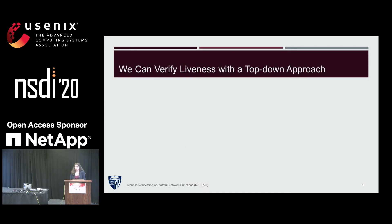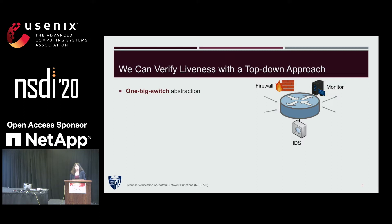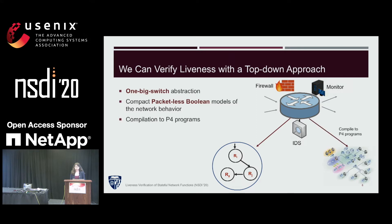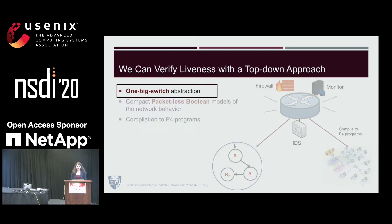In this work, we show that liveness verification is possible using a top-down approach. To this end, we provide a simple, familiar abstraction — one big switch — for users to write their desired functions such as firewall and intrusion detection system. We then model the behavior of these functions as compact Boolean and packetless formulas that can be efficiently verified. And finally, we provide a compiler that compiles these functions into executable code that can be installed in the network.